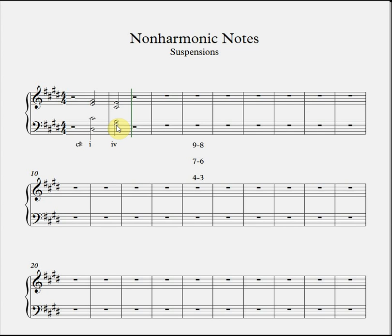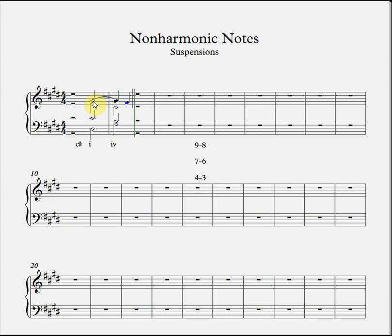We can figure out that a ninth above F sharp is going to be G sharp. So the next step is to look at the preceding tonic chord and find our G sharp, which is then going to be the note that's suspended across into the subdominant chord. We have the G sharp in the soprano, so we're going to tie this G sharp across and defer the arrival on the F sharp by one crotchet beat — a G sharp crotchet resolving to an F sharp. That is our 9-8 suspension. The suspension adds a bit of extra pathos to the original unembellished tonic-subdominant progression.